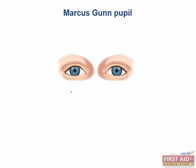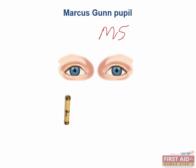A Marcus Gunn pupil is seen when the retina or the optic nerve is damaged, as in multiple sclerosis. Because there is decreased light input, the pupils do not constrict as much when light is shone into the affected eye. This is called the swinging flashlight test. When you shine the light into the non-affected eye, you produce a direct pupillary constriction in both eyes. However, when immediately swinging the flashlight to the affected eye, there is less light perceived and the pupils will actually dilate compared to where they were before.